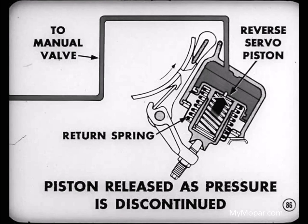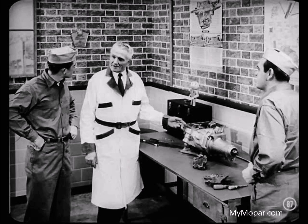And I suppose the rear servo piston is released by its return spring when the source of hydraulic pressure is discontinued. That's right, Bill. Which one of the pumps operates to build up this pressure during reverse, Jack? The front pump, Cliff. Remember, the rear pump operates from the output shaft, so it couldn't supply pressure when the car was not moving or was in reverse.